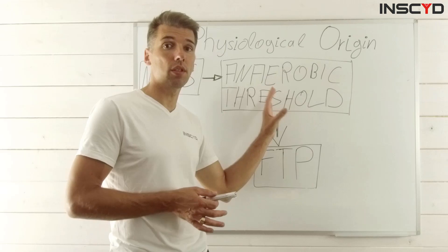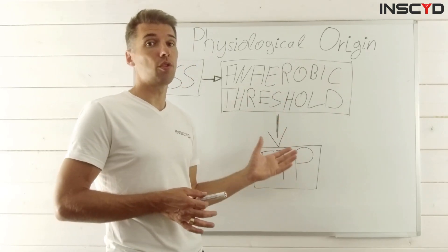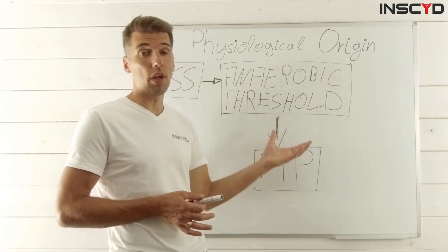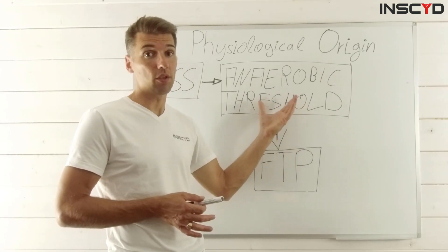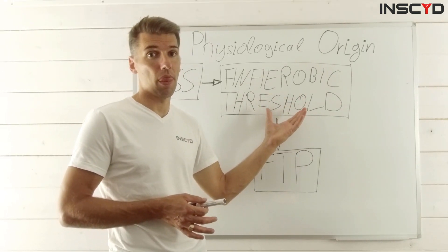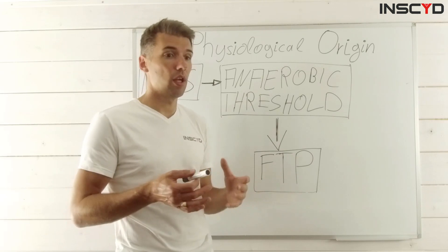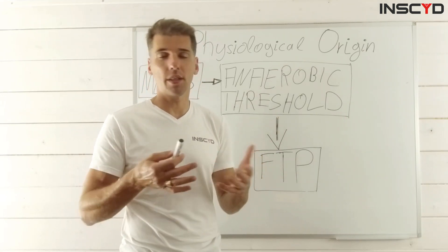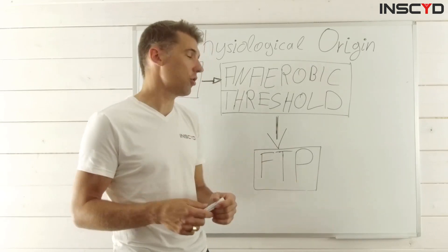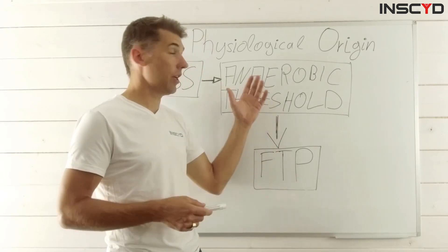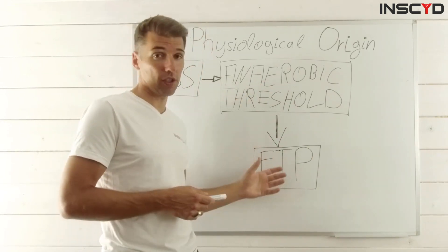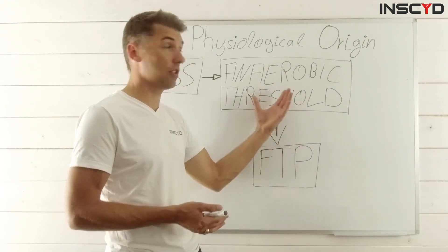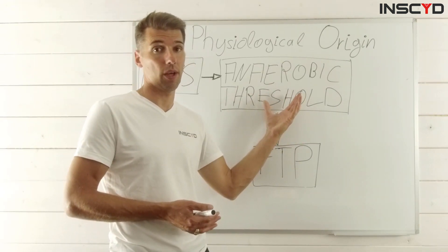So what FTP is actually trying to do is, without the need to go to a lab, determine this domain of intensity which correlates with your anaerobic threshold power. And because it is not the real physiologically correct scientific way to determine anaerobic threshold, it is called functional threshold power — because it is a functional value of this threshold you're looking for.